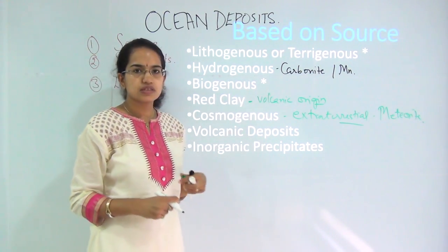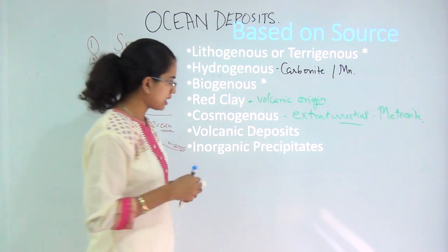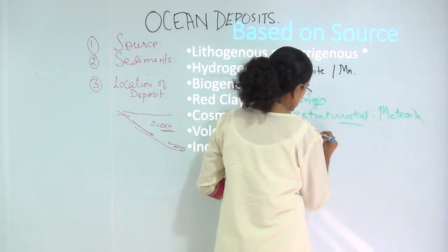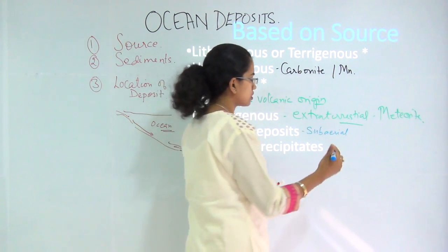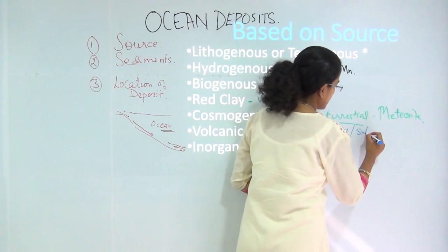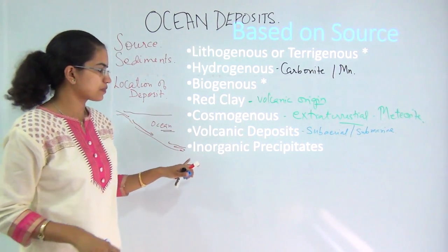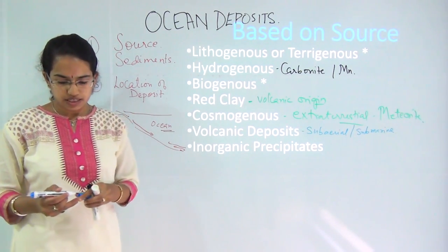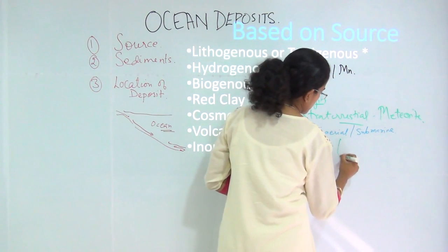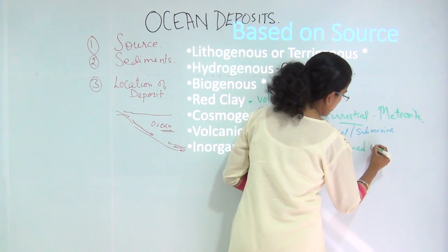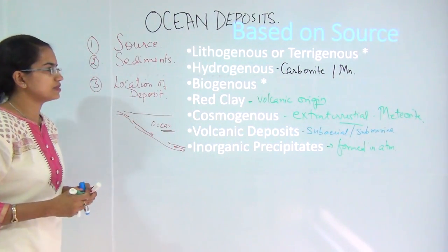Then you have volcanic deposits, which come from volcanoes. They can be either terrestrial — coming from volcanic explosions that occurred on the land surface — or marine, from volcanic explosions that occurred beneath the ocean surface. Finally, you have inorganic precipitates, which are formed in the atmosphere and slowly and gradually deposited into the ocean basin.